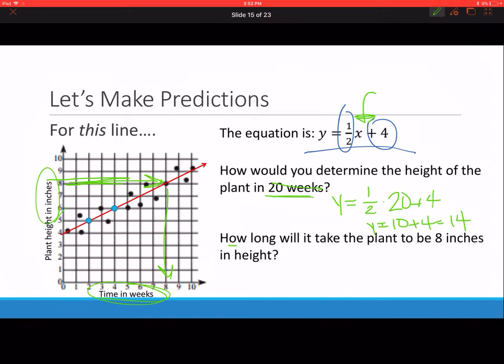How long will it take the plant to be 8 inches in height? 8 inches in height is the y axis, so we're going to substitute 8 for the y. 8 equals 1 half x plus 4, minus 4 from both sides. 1 half x equals 4, and to get rid of that fraction coefficient we multiply by the reciprocal. So x equals 8.